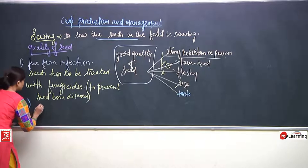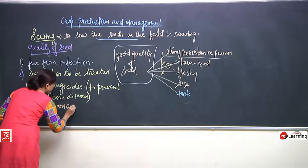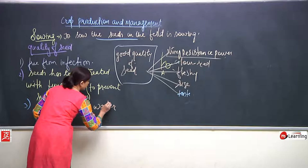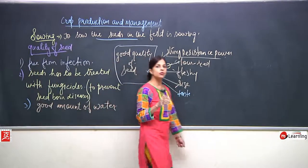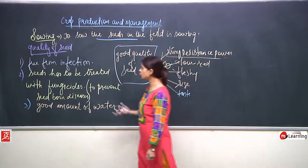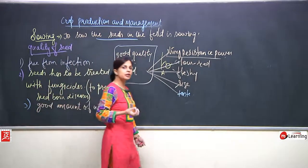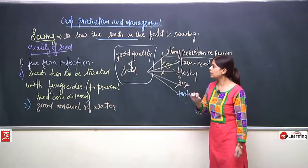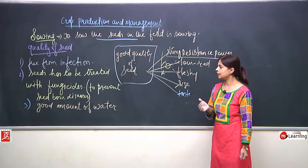The seed should have a good amount of water. If the seed is totally dry, when we try to grow it, it will not have enough moisture and the germination process will stop. The seed should also have a proper amount of nutrition in it to provide to the seedling.